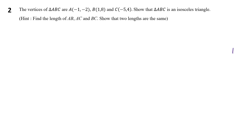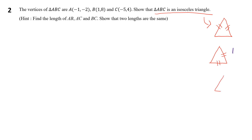Now let's look at this question: you're given a triangle with three vertices and asked to show that triangle ABC is an isosceles triangle. An isosceles triangle has two sides of the same length. The hint is to find the length of all three sides, then show that two of them have the same value — that proves it's an isosceles triangle.